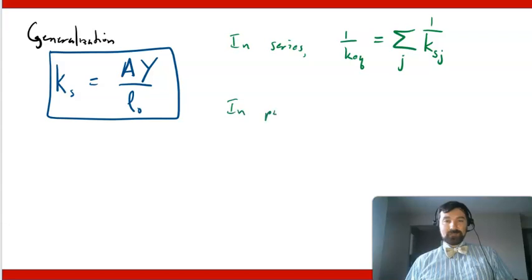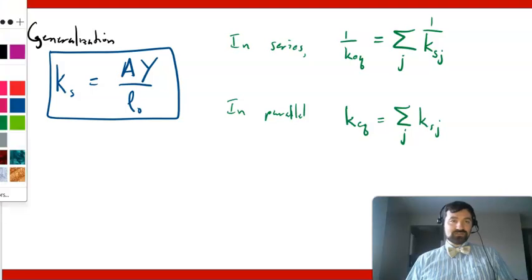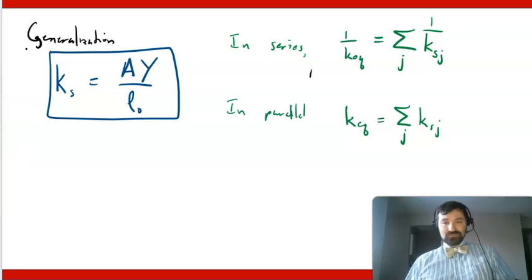And in parallel, the total equivalent spring constant is equal to the sum of the individual spring constants. The j in these cases is just an index. Okay, so you could write this one if you have like, let's say four springs. You'd have one over k equivalent is equal to one over k one plus one over k two plus one over k three plus one over k four.